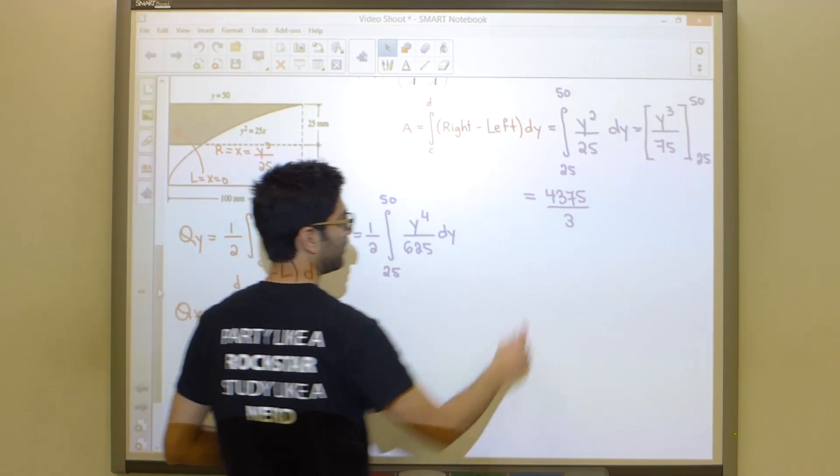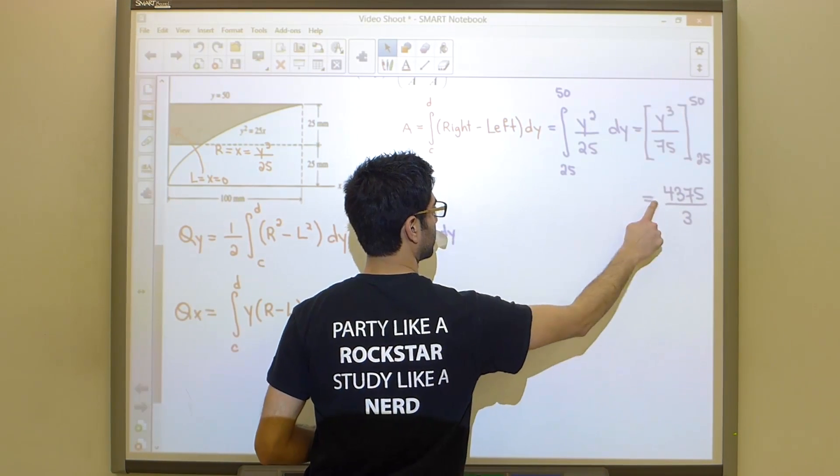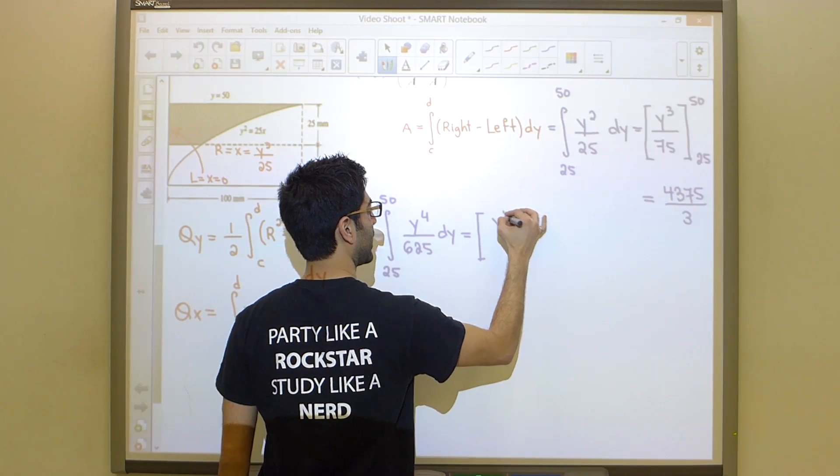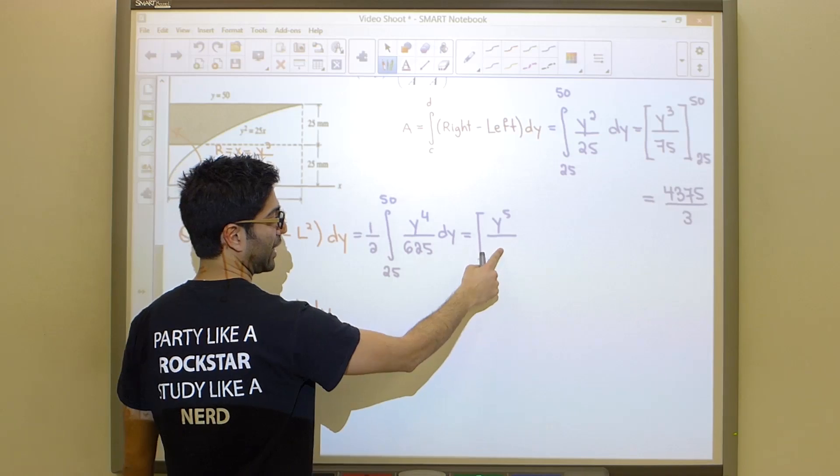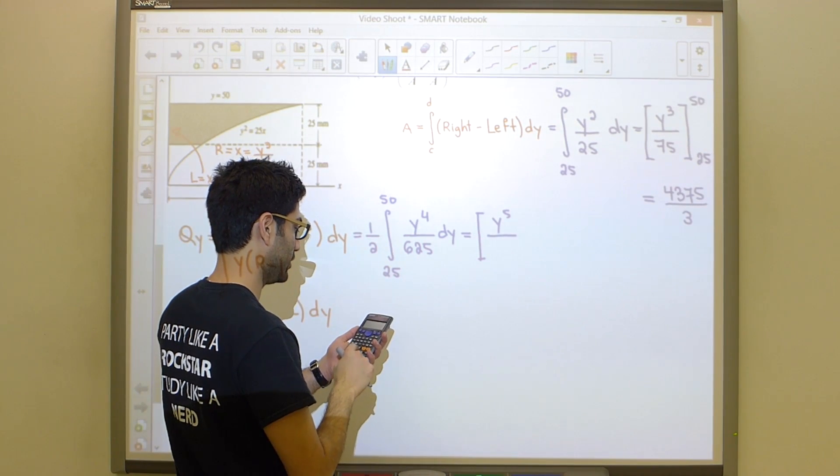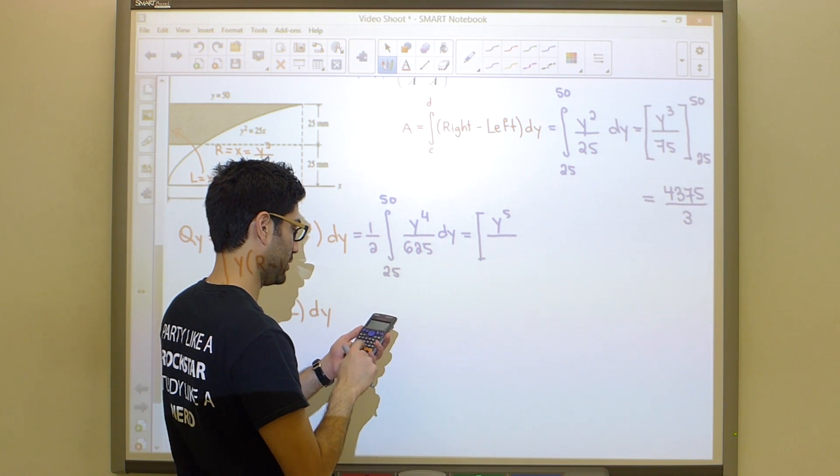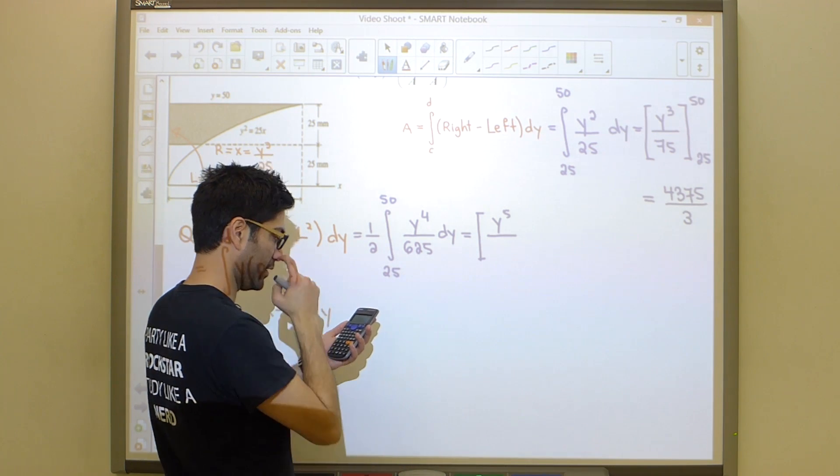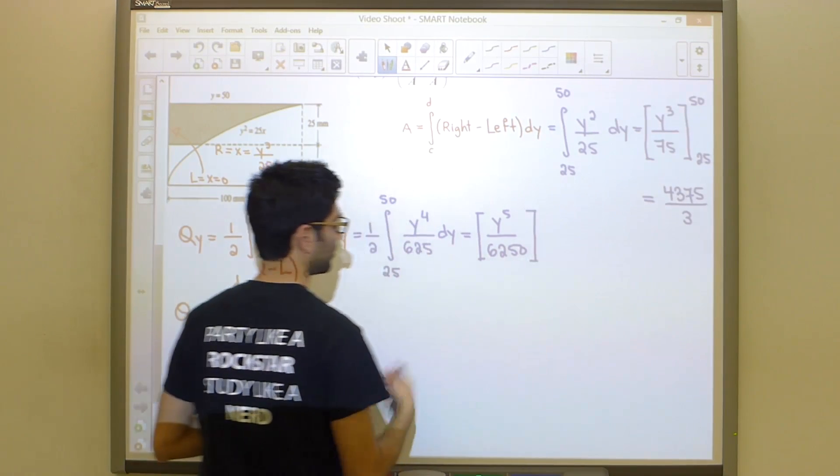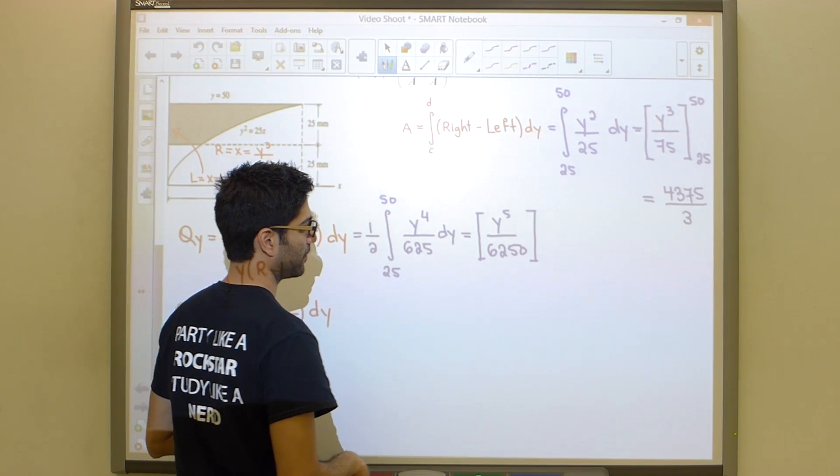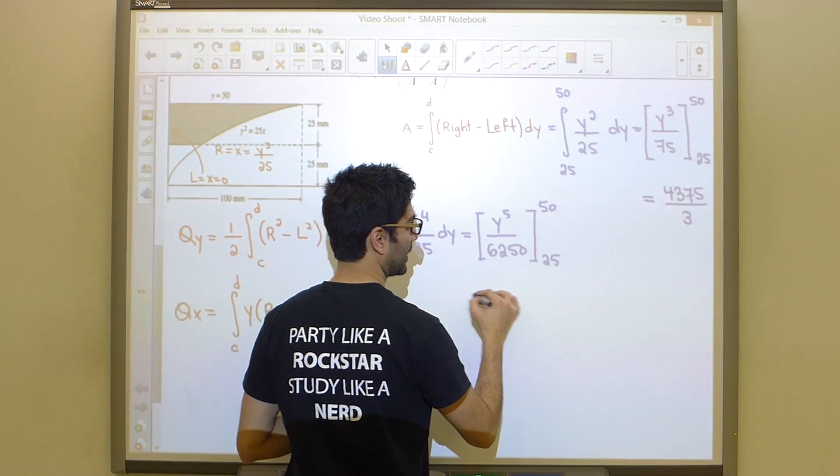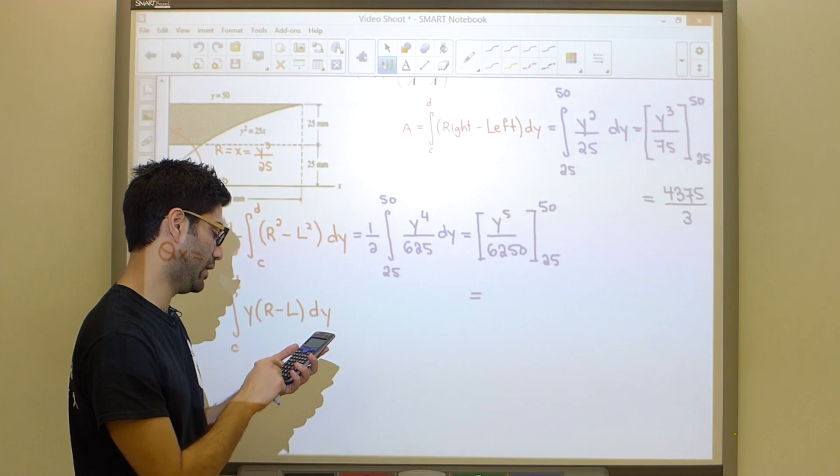And so if we evaluate him, we are going to simply get y to the five over 6250. So two times 625 times five gives us 6250. I just multiplied all the constants on the bottom. And now we're going to take this from 25 to 50, and that's going to give us the next ingredient that we need.